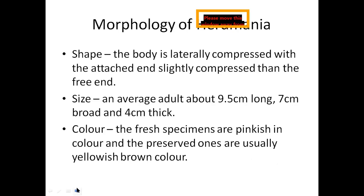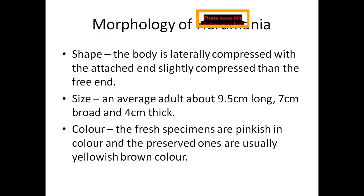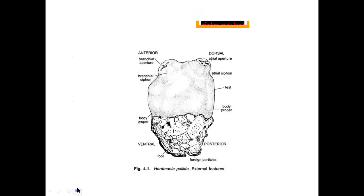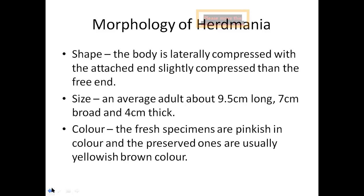Now let us move on to the morphological aspects. Starting with the shape of the organism: Herdmania has a body which is laterally compressed at the attached end. The foot portion of Herdmania, which is attached to the substratum, is slightly compressed compared to the free end. Looking at the picture, you can see the foot portion is slightly compressed.